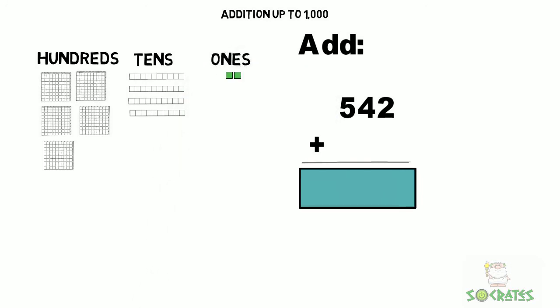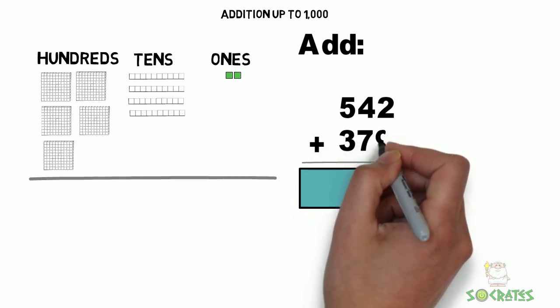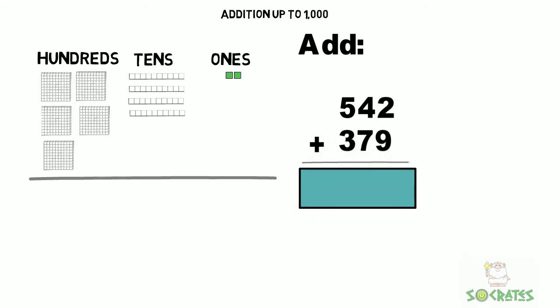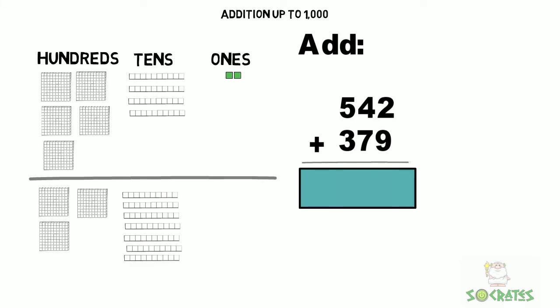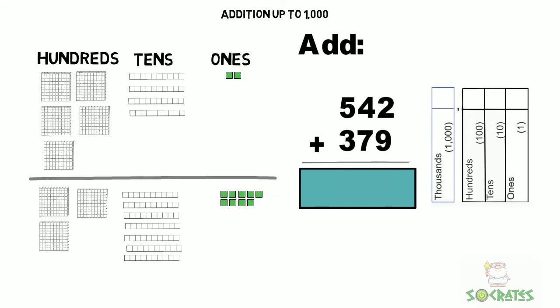Plus 379 - that's 3 hundreds, 7 tens, and 9 ones. Let's use our hundreds chart.